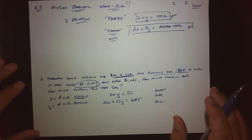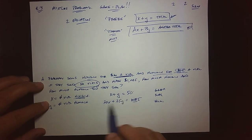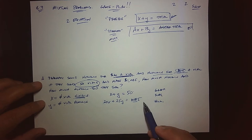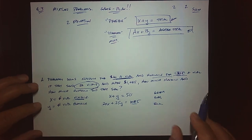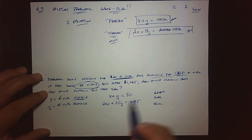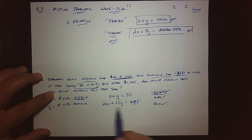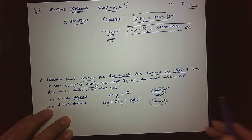Now that we know how to set up mixture problems, let's go back and solve them. Since the numbers are really big, we'll use our calculators. To solve a system, we can graph it, substitute, or eliminate. Graphing is impractical here since intercepts like 1085 would be very large, so substitution or elimination comes to mind. Let's go ahead and use elimination for this one.